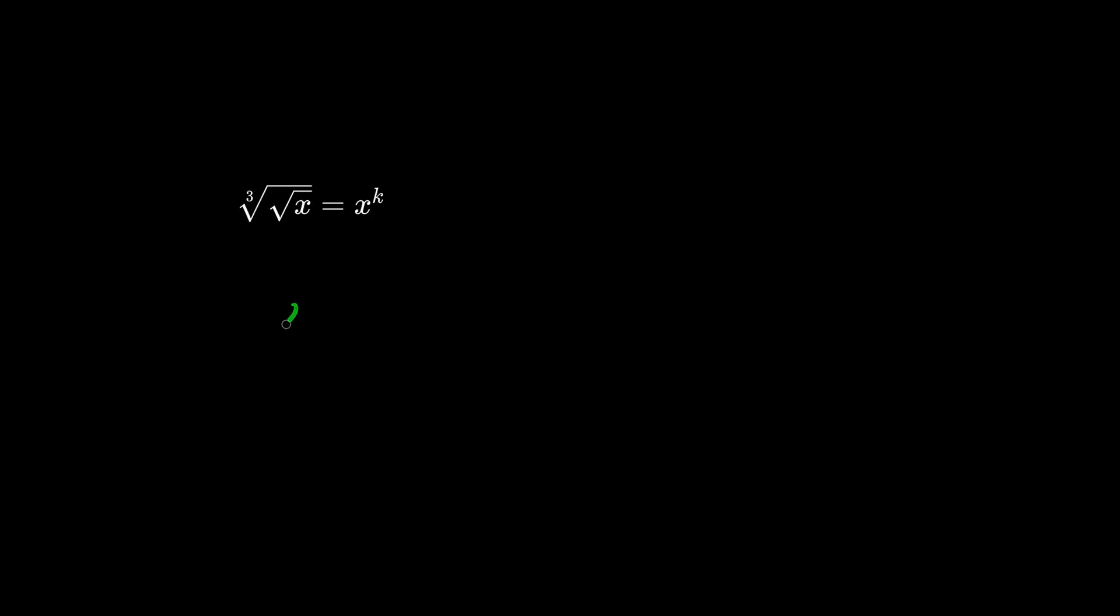When you see a radical, convert it to a fraction. x to the one-half means square root and when we see cube root that means one-third. We multiply the exponents and now we can see that k is one-sixth.